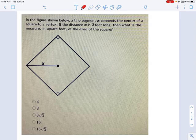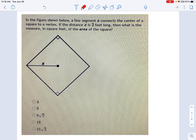So in this problem, I'm shown a square, and all we're given is the fact that it is a square, that's one thing that's important, and the fact that this distance, x, is 2 feet long. And they want to know what's the area of the square.